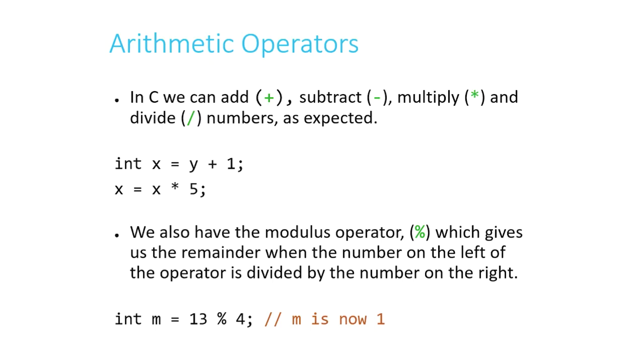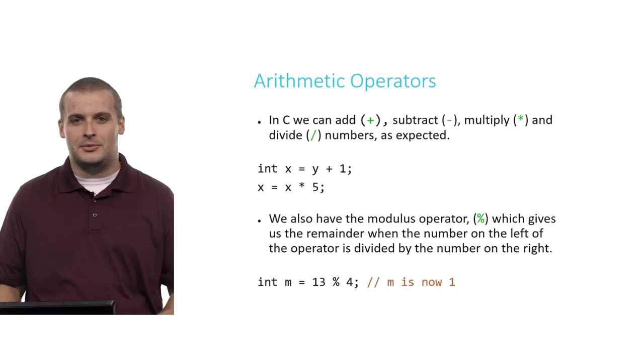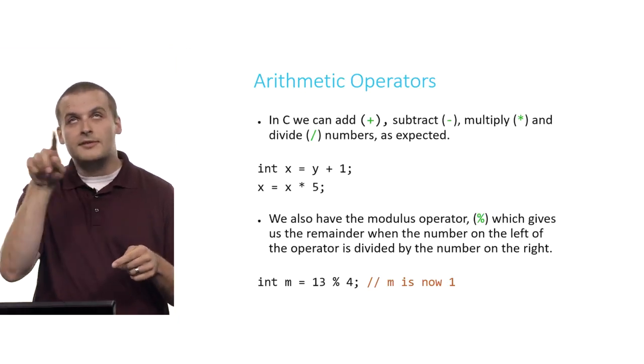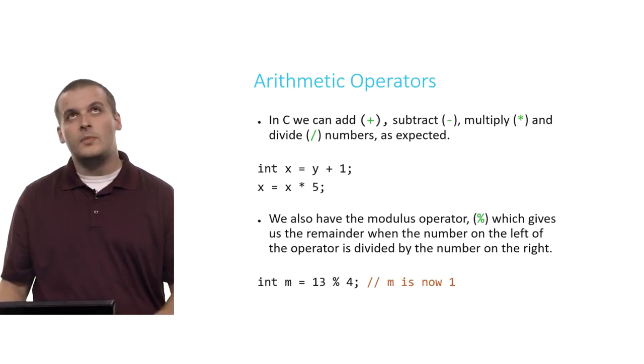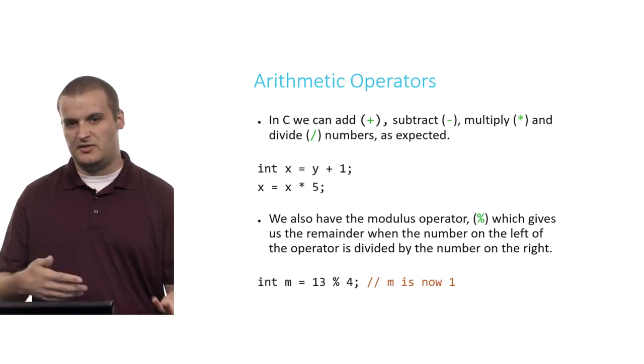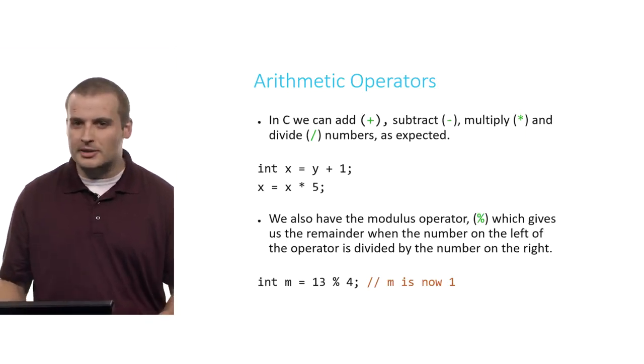There's another operator that you've probably not necessarily heard called this, but you've certainly worked with in the past if you remember your days of long division way back in grade school. It's called the modulus operator. What modulus does is it gives you the remainder when you divide two numbers together. So if I divide 13, if I say 13 divided by 4, what's the remainder? I have another line of code here: int m equals 13 mod 4. And I say here in a comment that m's value is now 1. Do the long division out in your head. 4 goes into 13 three times with a remainder of 1. That's basically all the modulus operator does, it tells you when you divide, you get the remainder.